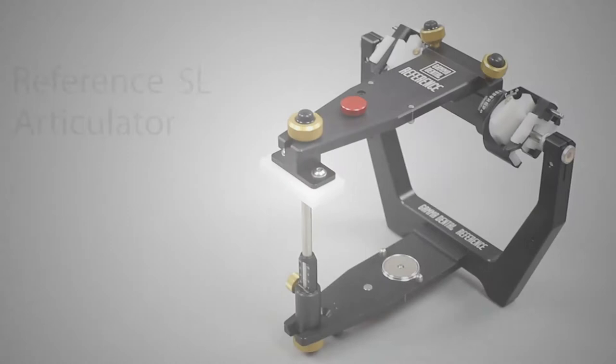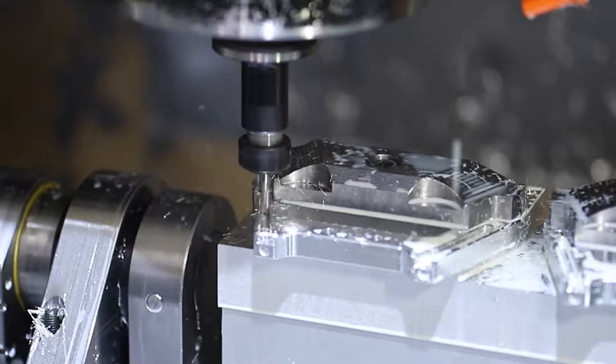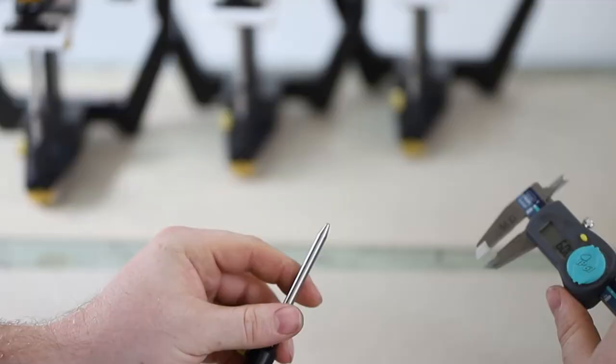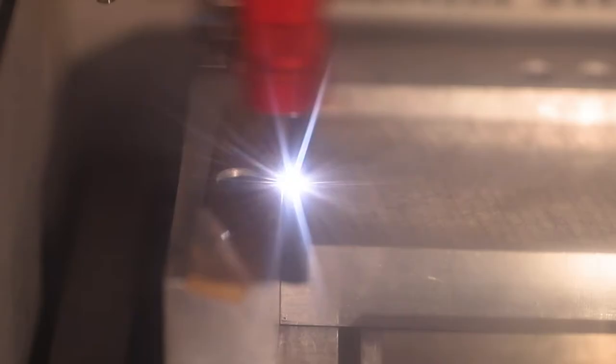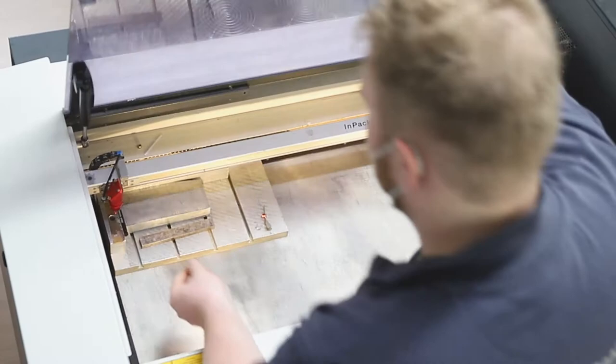Hello and welcome to this Gamma tutorial. Today we will introduce our Reference SL articulator. The Gamma Reference SL is a signature articulator produced for dental professionals under the highest manufacturing skills and quality criteria in our factory in Austria. The device was designed under the instructions of Professor Rudolf Slavicek.